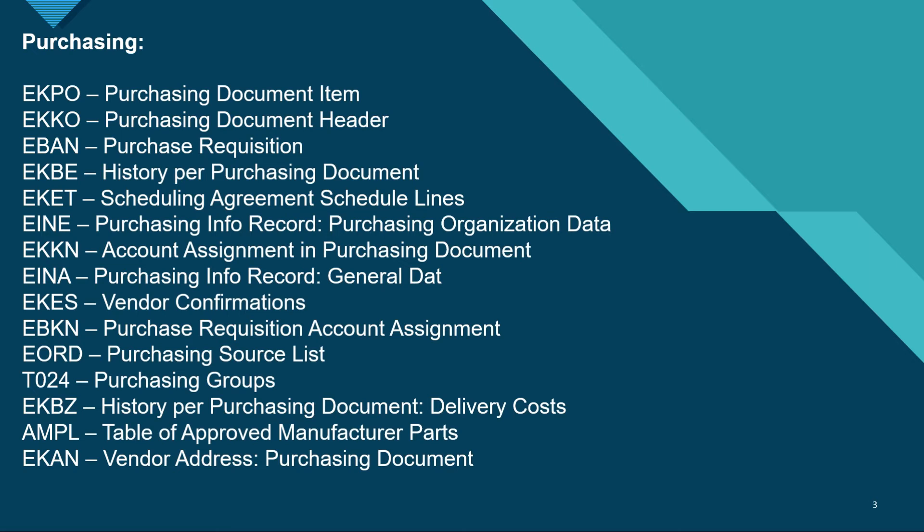EINE has the information about purchasing info record. EINA has the general data for PIR. EKKN has the information of account assignment in purchasing document. EKES has the regular confirmations. EKBN has the account assignment data for purchase requisition.